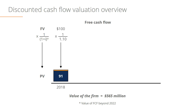If we look at an example of a cash flow that occurs in 2018, we have a discount factor. The formula for the discount factor is 1 over 1 plus the rate — in this case 10% — raised to the power of the number of periods, in this case 1.